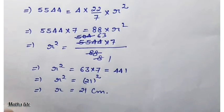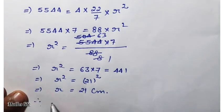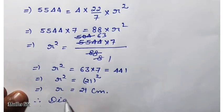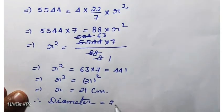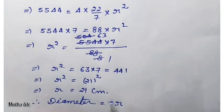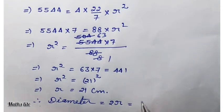We need to find diameter. Therefore diameter equals 2R, radius ka double. 2 times R, 2 times 21.